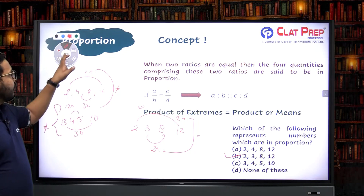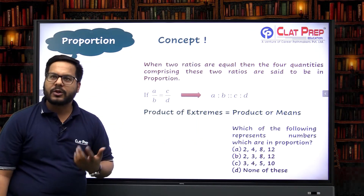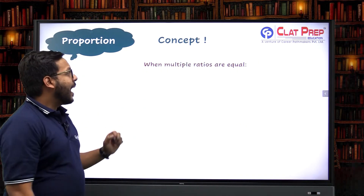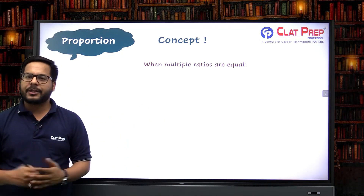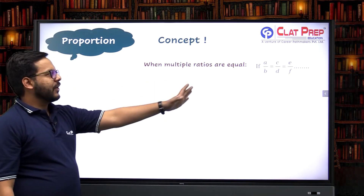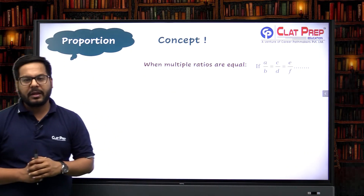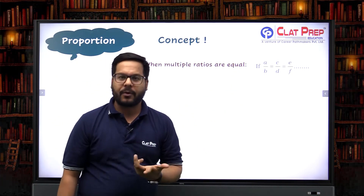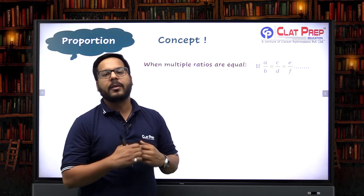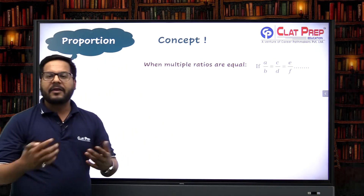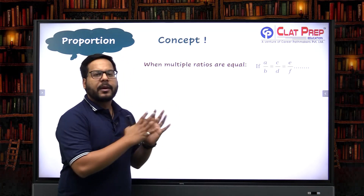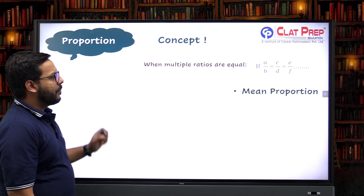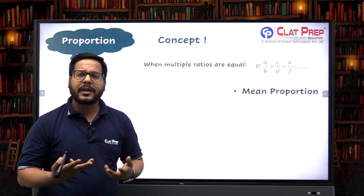This is called simple proportion — only two ratios are equal. Now what happens when multiple ratios are equal? For example, a/b = c/d = e/f. This is a basic example of geometric progression, which we'll cover in a later video. When multiple ratios are equal, there are three aspects to cover: mean proportion, third proportion, and fourth proportion.